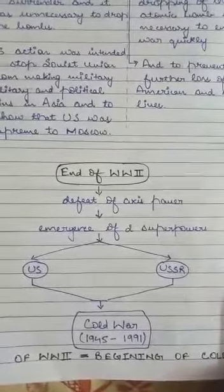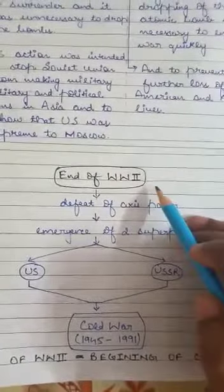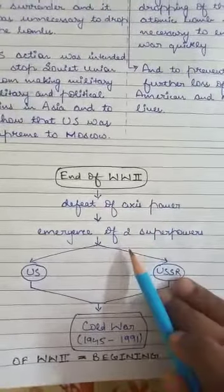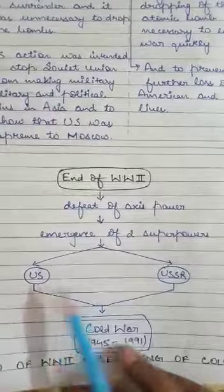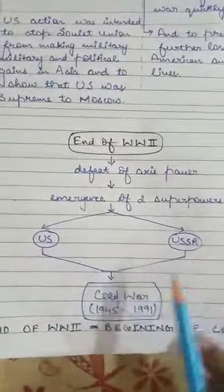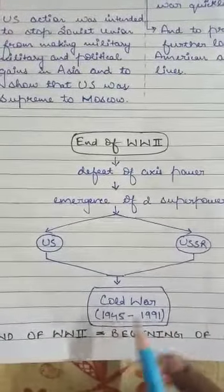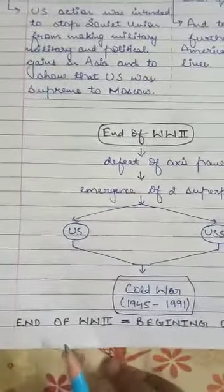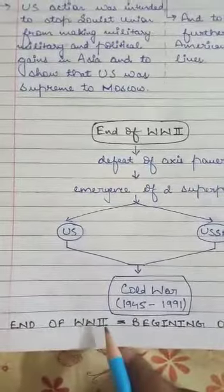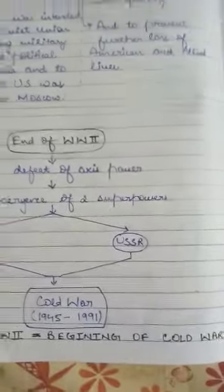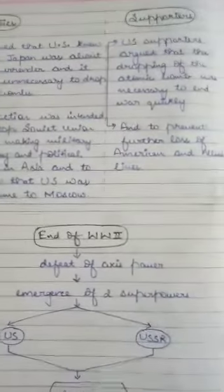Now that you have understood the history of the Second World War: it ended in 1945, led to the defeat of the Axis Powers, and resulted in the emergence of two superpowers — the US and the USSR. When these two blocs emerged, it led to the emergence of the Cold War era from 1945 till 1991. As it is generally said, the end of World War II is the beginning of the Cold War. In the next video, I will explain what the Cold War actually is. Thank you.